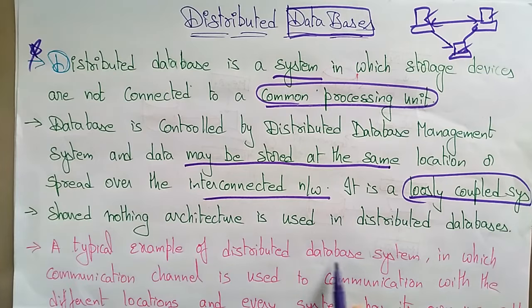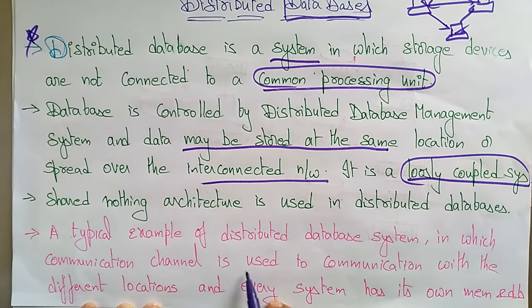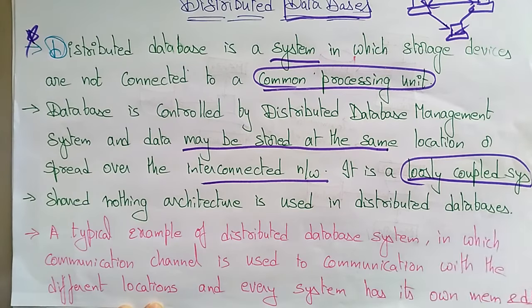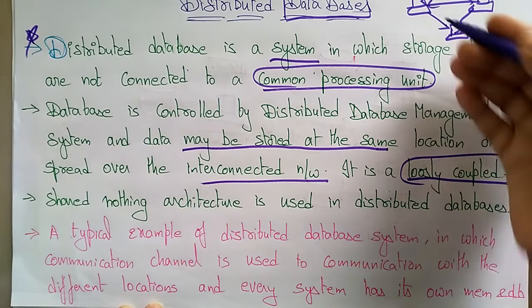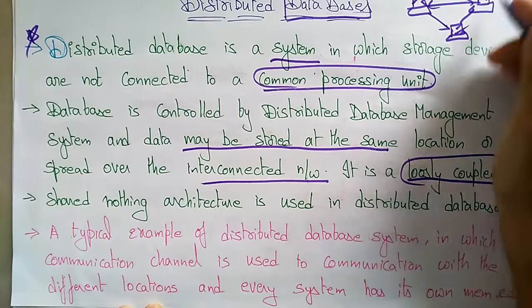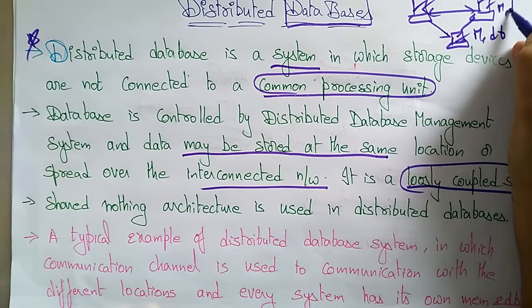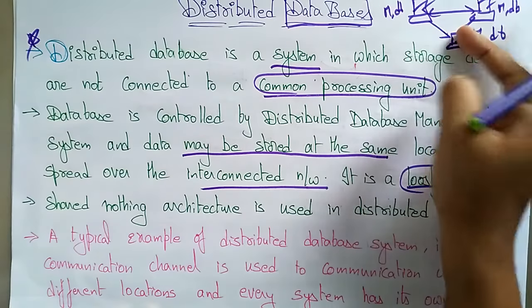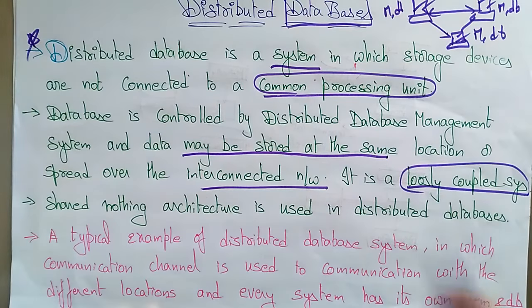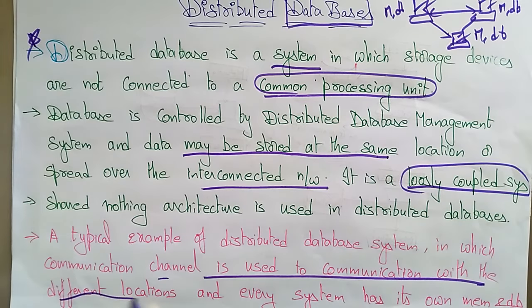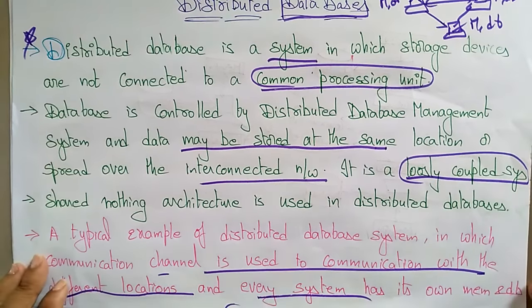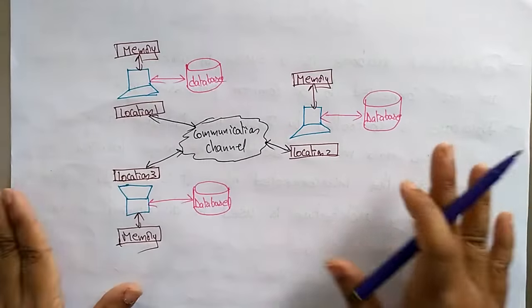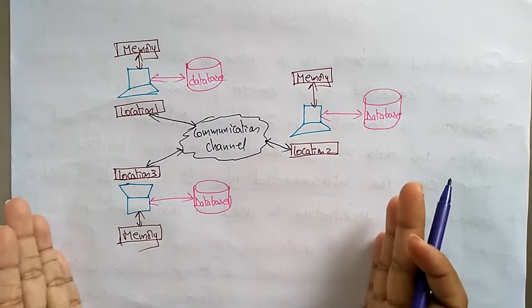A typical example of a distributed database system uses a communication channel to communicate with different locations. Every system has its own memory and its own database. The main concept is that a communication channel is established to communicate with different locations, and every system has its own memory and database. Let's see the diagram of a distributed database.